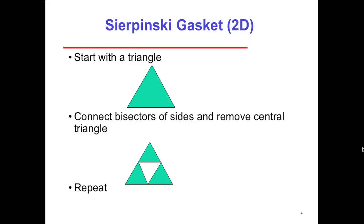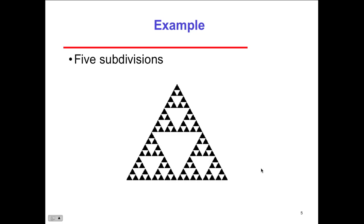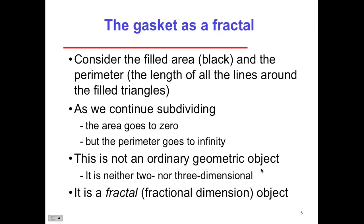So here's an example of our 2D, I don't know what that is, some kind of a gasket. You start with a triangle. You connect bisectors or sides and removal of the center of the triangle. And you repeat it, and you end it with five subdivisions in this particular triangle, as an example. So as a fractal, you consider the filled area is black and the perimeter, the length of the lines around the filled triangle. You continue subdividing, and the areas go to zero, but the perimeter goes to infinity. So it's not an ordinary graphic type of object. It's either 2D nor 3D dimensional. It's a fractal object.